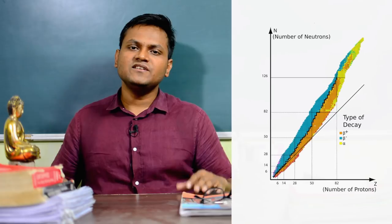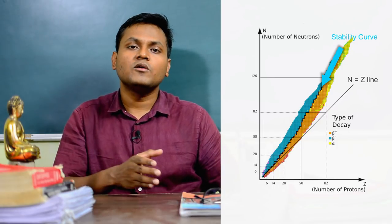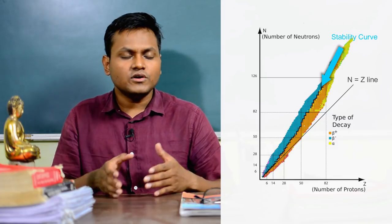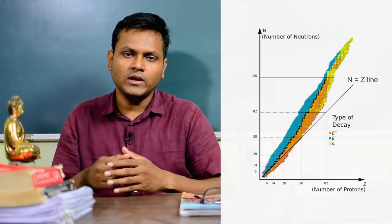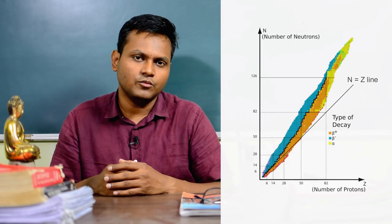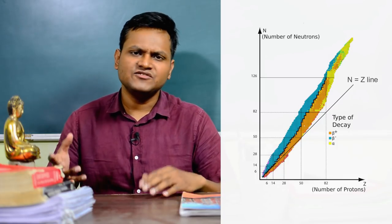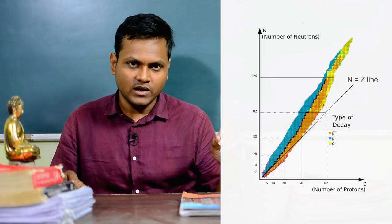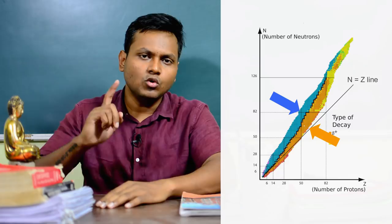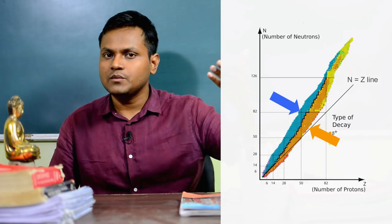The NZ graph shows the kinds of nuclear configurations that exist in nature. The line passing through it is known as the stability curve, which represents nuclear configurations where the number of neutrons and protons leads to the most stable arrangement. For smaller nuclei, the stable neutron-to-proton ratio is about 50:50, but for larger nuclei, the number of neutrons slightly exceeds the number of protons. Nuclei that fall above or below the stability curve have an excess of protons or neutrons and are unstable.